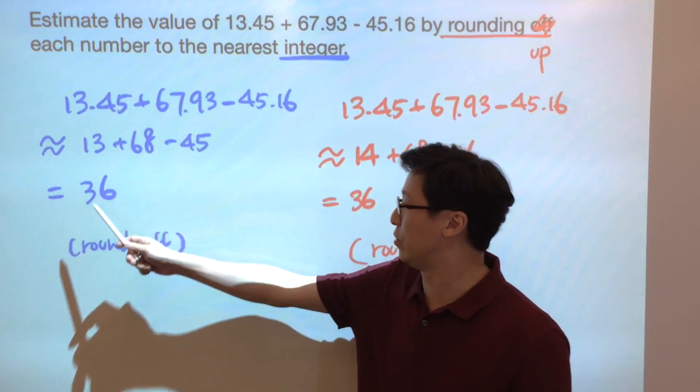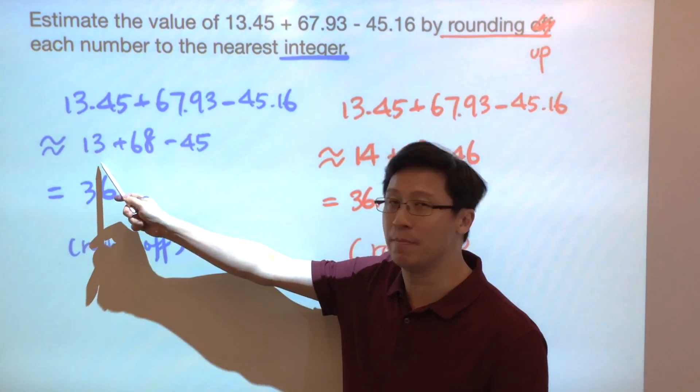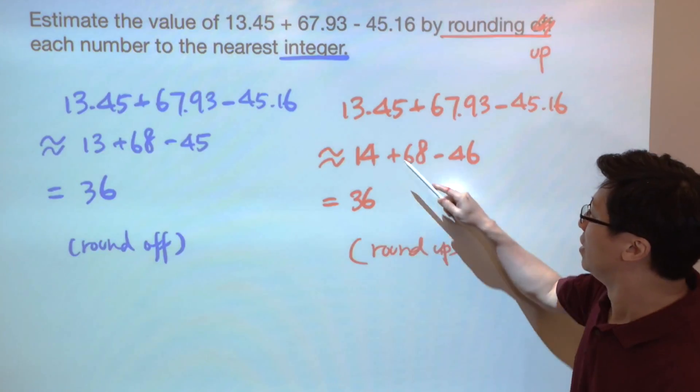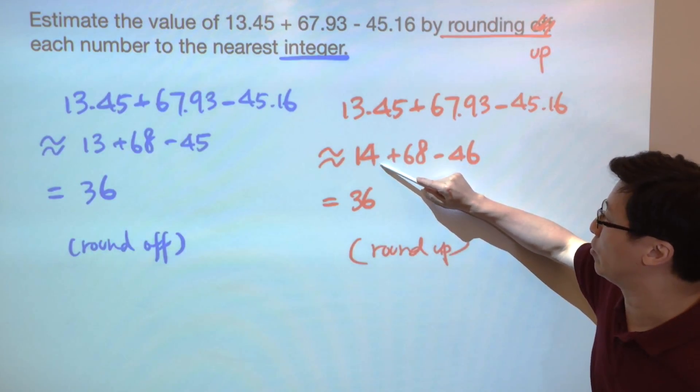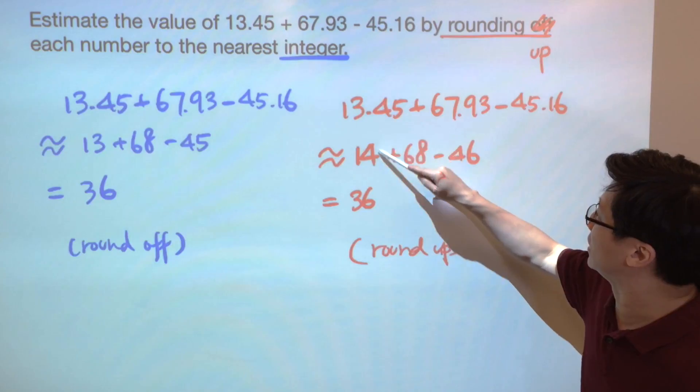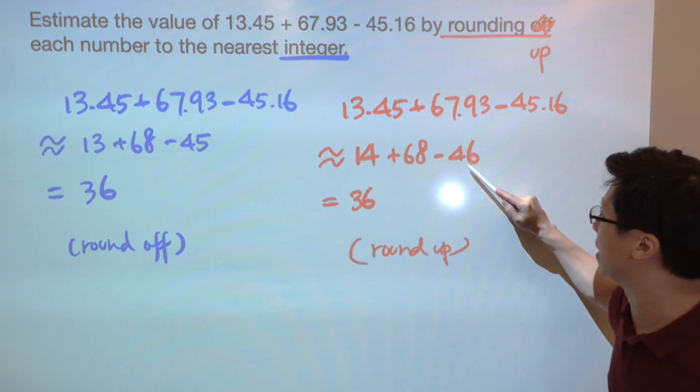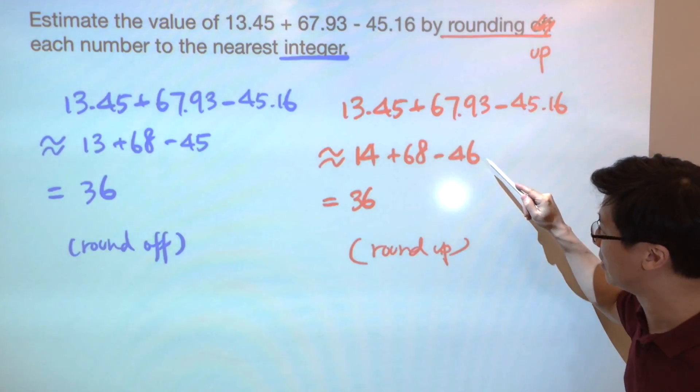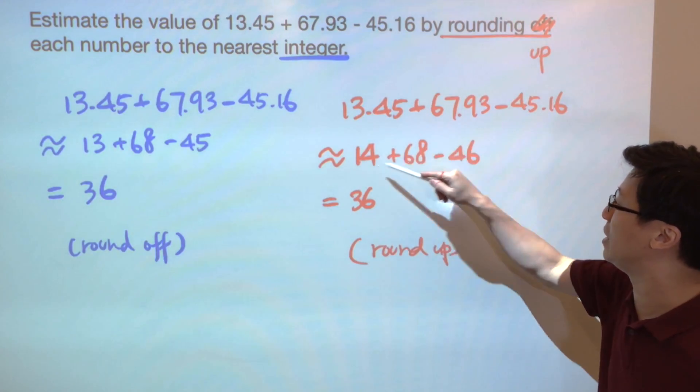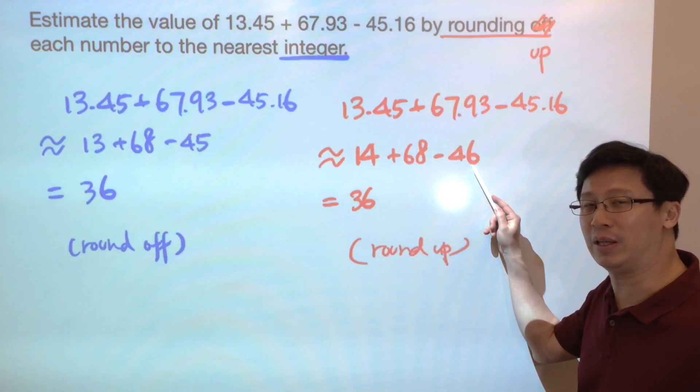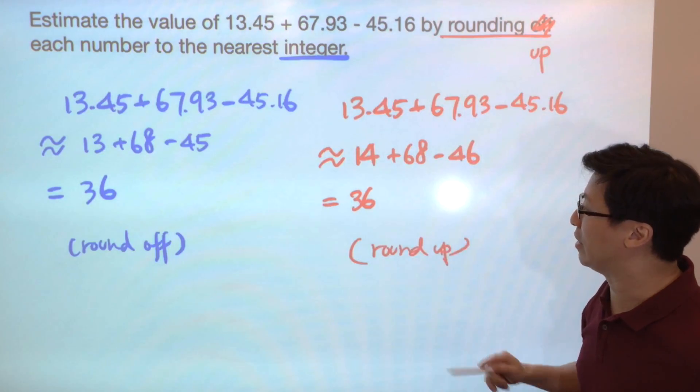And before round up, although 13 becomes 14, this becomes 14, but minus 45 becomes minus 46. That means we don't have any increase or decrease because we add one, but here we need to subtract one more, therefore they also give the same final answer.